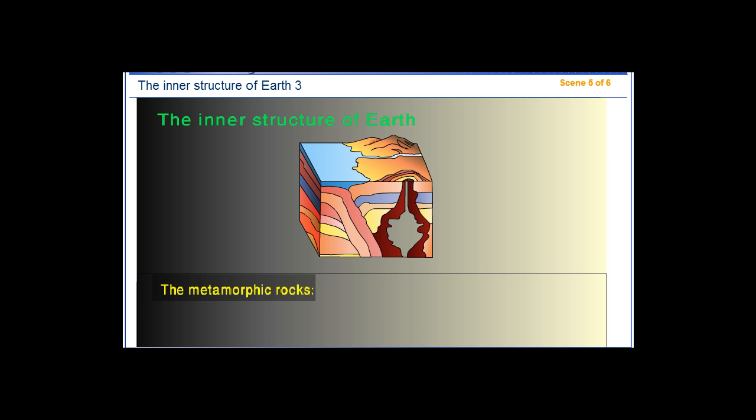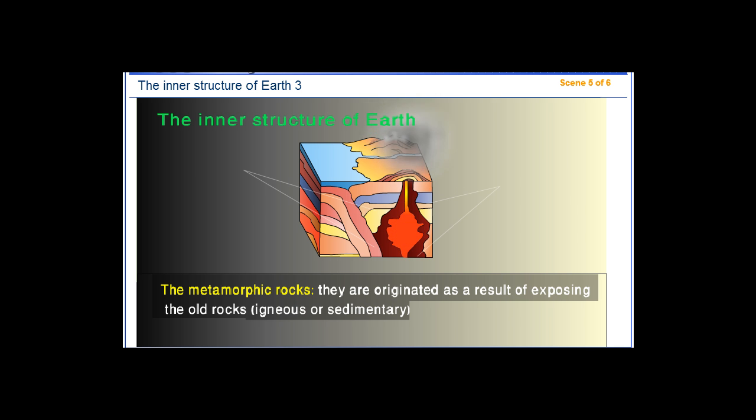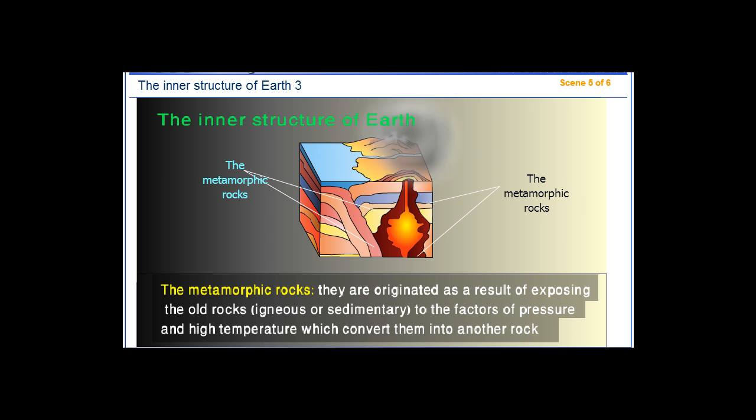Metamorphic rocks are originated as a result of exposing old rocks, igneous or sedimentary, to factors of pressure and high temperature, which convert them into another rock.